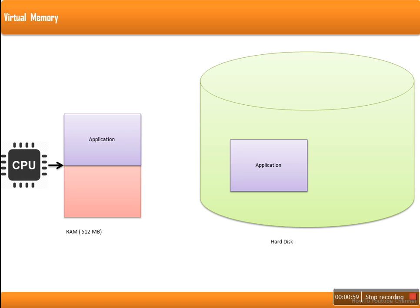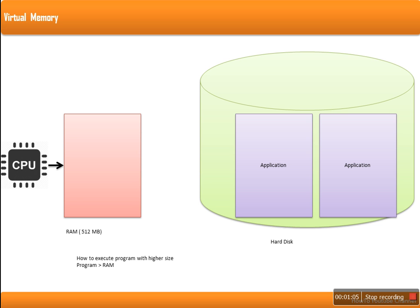This is a simple scenario. Now in this approach, if the size of the program is larger than the memory available in the system — let's say our RAM is 512 MB and the program size is 1 GB — how can this program be executed? The simple answer is: this program cannot be executed if we follow the approach that the entire program has to be loaded in memory.